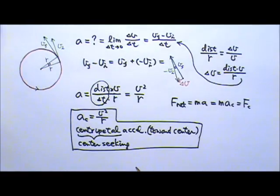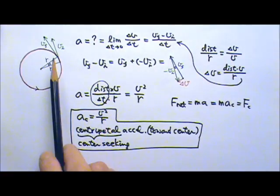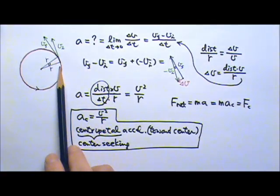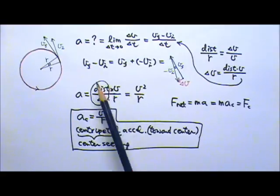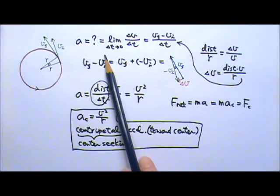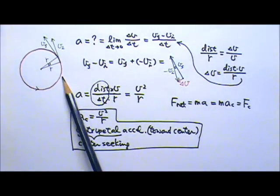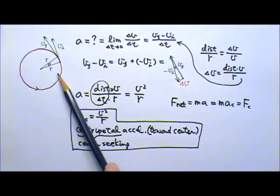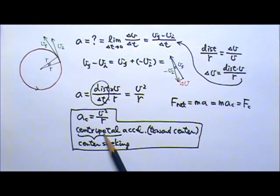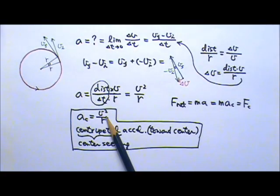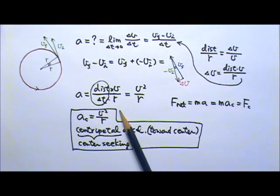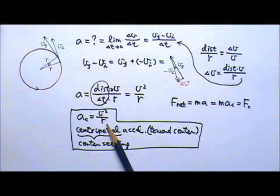Although we derived v squared over r using uniform circular motion, we only used a very small part of a circle and took the average over a very short time. So if the speed changes around the circle, the centripetal acceleration would still be v squared over r. As the speed changes, v changes, and the magnitude of the centripetal acceleration changes accordingly — and this equation still holds.